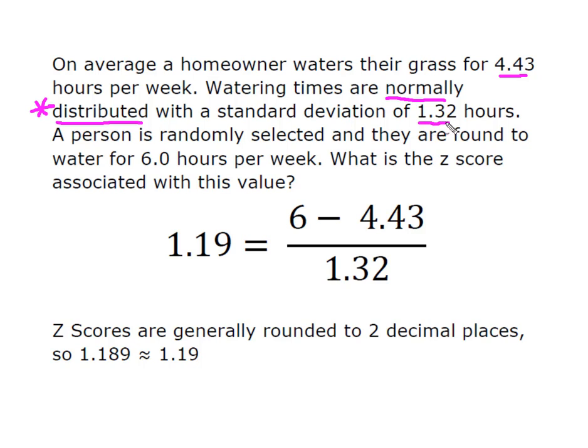We're given the standard deviation of 1.32 hours. And if we randomly select a person and they're found to water for 6 hours per week, what's the z-score associated with this value of 6?